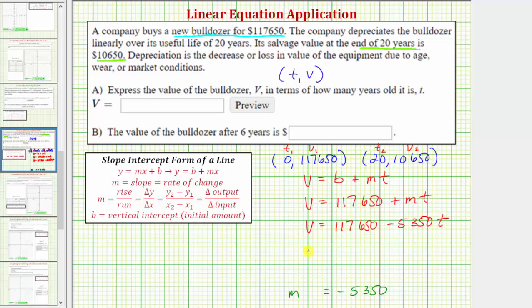Of course, we could also write this as V equals negative 5,350T plus 117,650. These are equivalent equations.